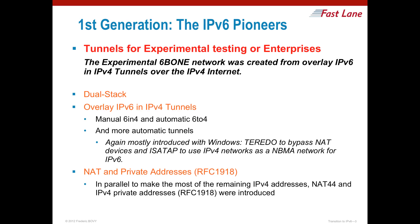I would like to first introduce the generations of tools we have seen for transitioning to IPv6. The first generation was introduced when IPv6 was introduced in 1996. Dual stack and static tunnels were the first tools introduced to permit an experimental backbone called the 6bone to be created. At the same time, NAT and private addresses permitted extending the life of IPv4 for 20 more years, but it also broke a few things about the internet, like the peer-to-peer model.